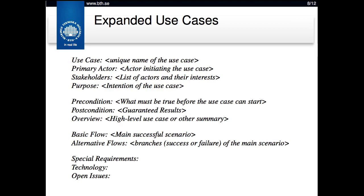Expanded use cases contain more details about a particular use case. You take your basic use cases and expand them with more information — it's a natural growth. You still have the same unique name, and you talk about the primary actor. In the point-of-sale example, the cashier is the primary actor because the customer isn't directly interacting with the system. You also list stakeholders — all the people and organizations who might be interested in this use case — and the purpose: why is this use case important and how does it prioritize against others?